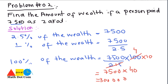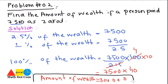That equals 3 lakh. So the original amount was 3 lakh. We can write it as: the amount of wealth is 3 lakh, on which the person paid zakat of 7,500. This is how you can find the amount of wealth if you are given the amount of zakat a person paid after a year. This was all about what is zakat and how you can calculate it.